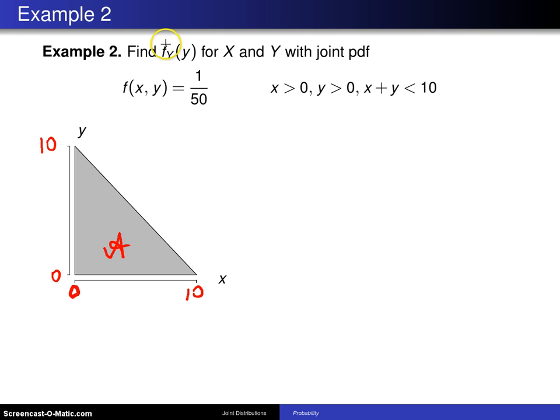Now the question asks for the marginal distribution f_y(y). So here it is, f_y(y) is equal to, in this case we want to integrate out x from the joint probability density function. And that turns out to be the integral of f(x,y), and you know that's 1/50 dx.